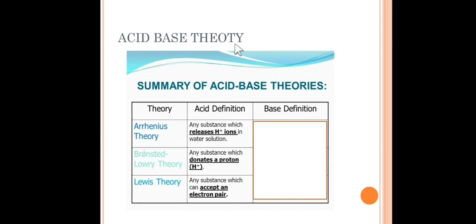We are studying the strength of acids and structural effects. To recap, according to Arrhenius theory, acids are any substance which releases H⁺ ions in water solution. Bronsted and Lowry suggested that any substance which donates a proton is called an acid. According to Lewis theory, any substance which can accept an electron pair is called an acid.